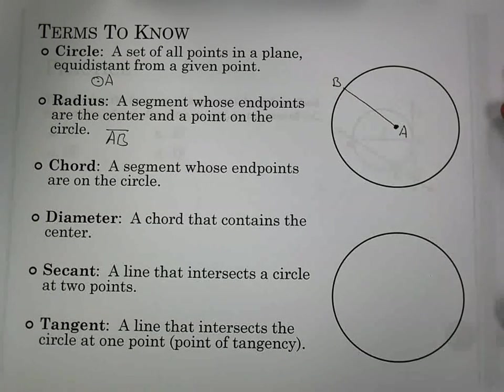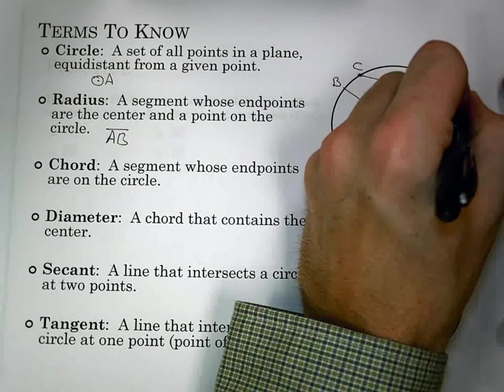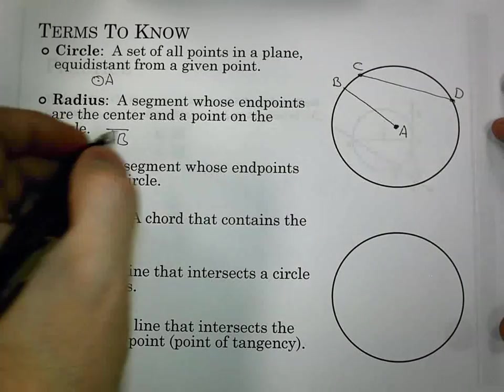A chord is going to be a segment whose endpoints are on the circle. Now where a radius has an endpoint at the center, the chord is going to have its endpoints on the circle. So I call that chord CD.